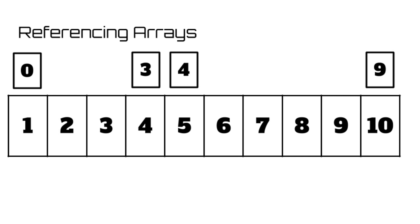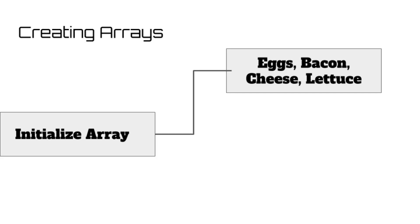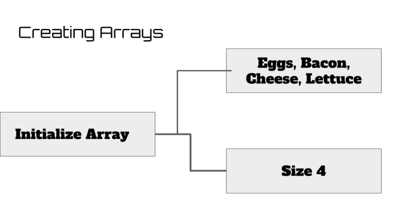Another extremely important thing to note about arrays has to do with their size. When you initialize an array, you can do it either one of two ways. You can either populate it with the strings or integers that you want contained in the array right then and there, or you can define how many elements you want the array to be, and then add strings or integers later.